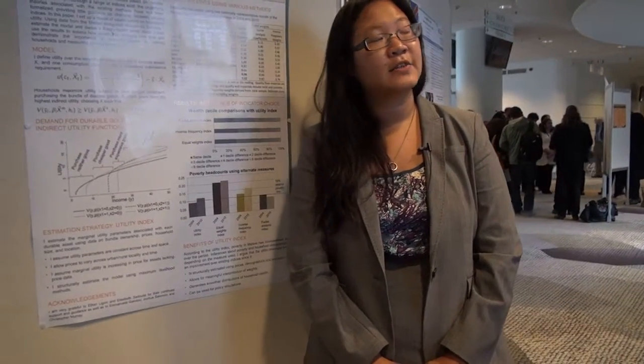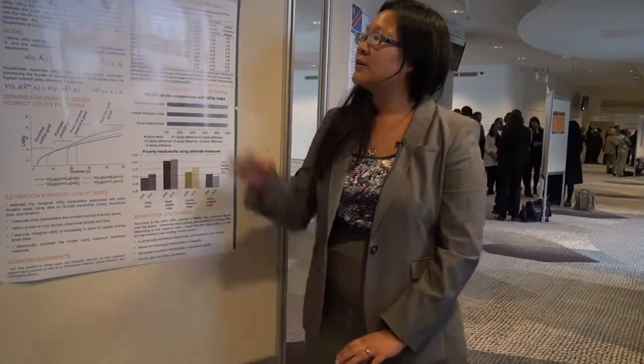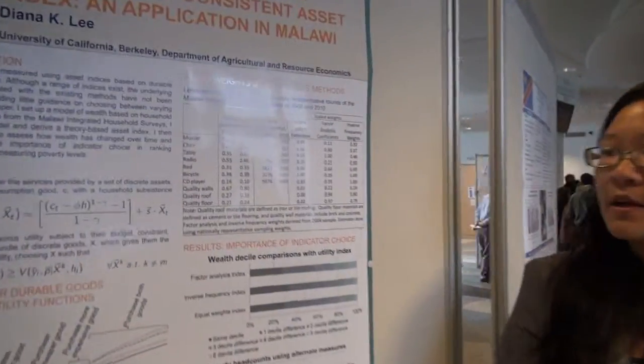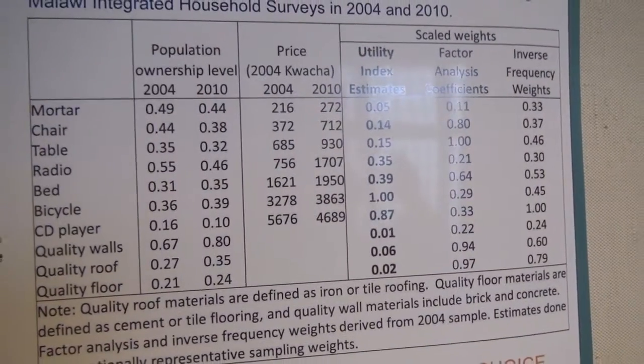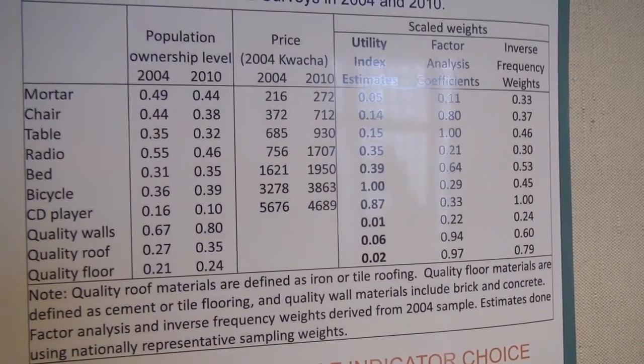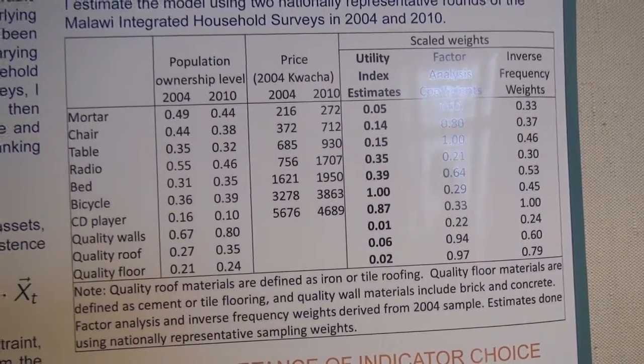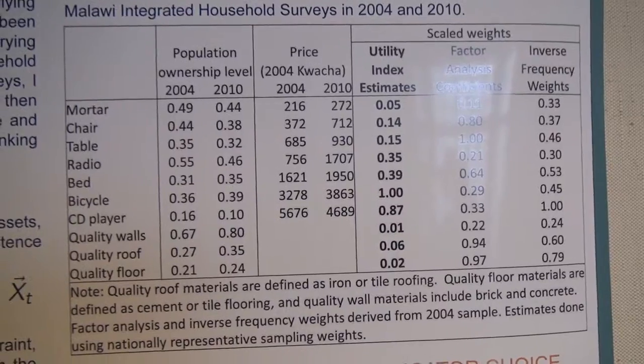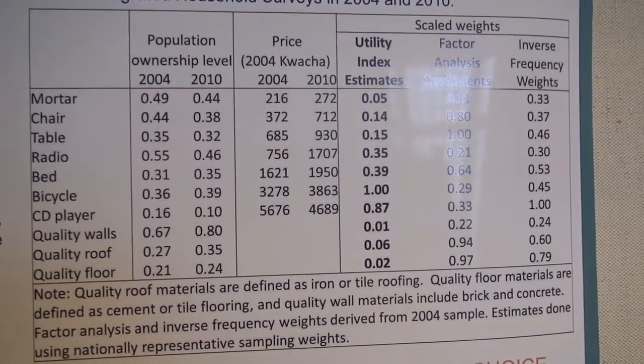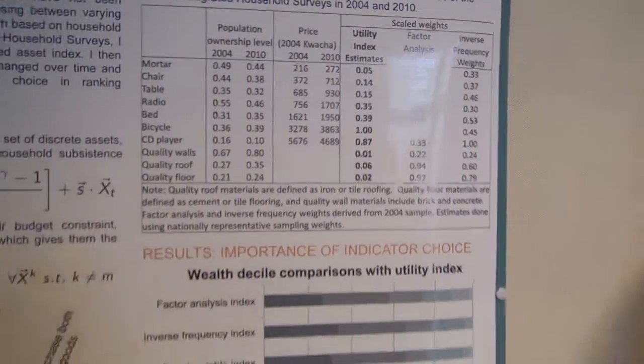One additional assumption is that we incorporate things like housing quality, which don't often have prices associated with them. So I assume a link between marginal utility and price, where that link is increasing in price. Estimating this using two rounds of data from the Malawi Integrated Household Surveys — with seven durable goods and three types of housing quality — I find that marginal utility is broadly increasing in price, with the exception of CD players, which don't seem to provide much of a utility boost.